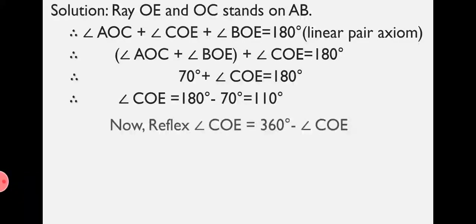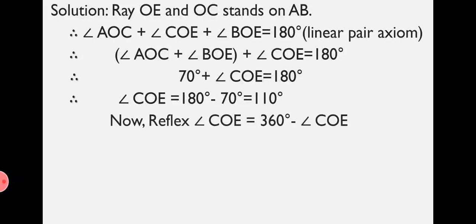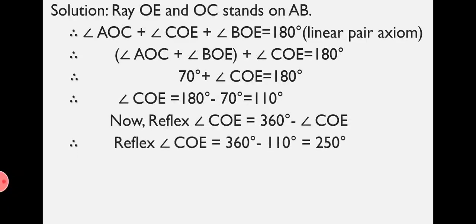Now, Reflex Angle COE equals 360 degrees minus Angle COE. To find the reflex angle of any given angle, we subtract the given angle from 360 degrees. That is, Reflex Angle COE equals 360 minus 110, which equals 250 degrees.